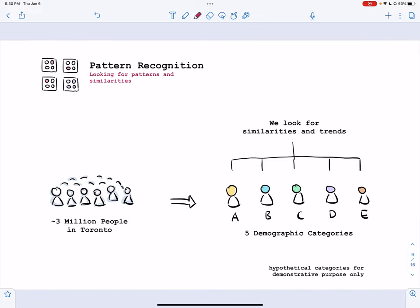With pattern recognition, we see that there are 3 million people in Toronto. This is a really unwieldy number, and we simply can't do case-by-case, person-by-person. Each of us have very different background perspectives, beliefs, and lived experiences. So we look for similarities and trends.